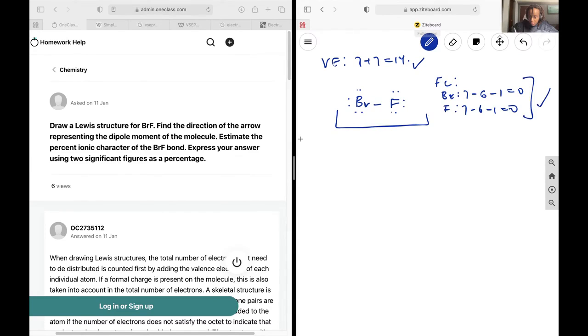Now I need to draw my dipole, and so my dipole is going to be from the less electronegative one to the more electronegative one. The reasoning for that is because the less electronegative one will form a partial positive charge, and the more electronegative one will form a partial negative charge, and the dipole should point from the positive end to the negative end.